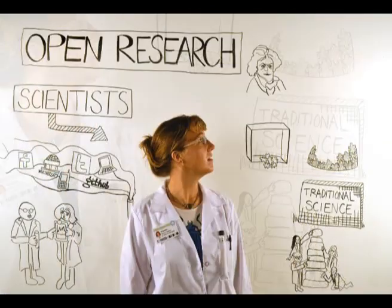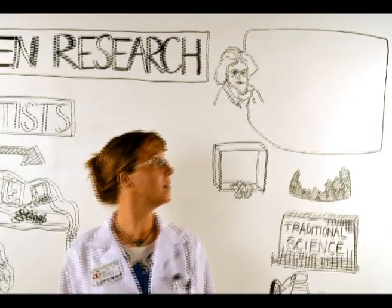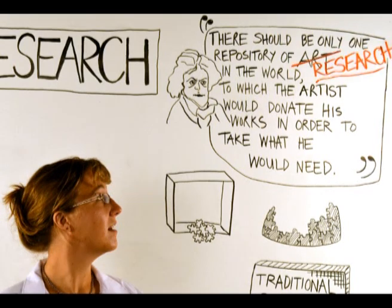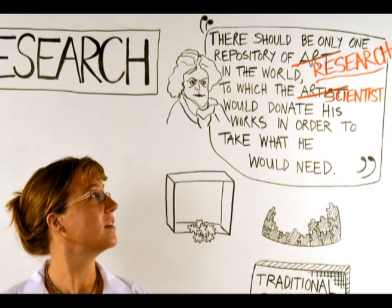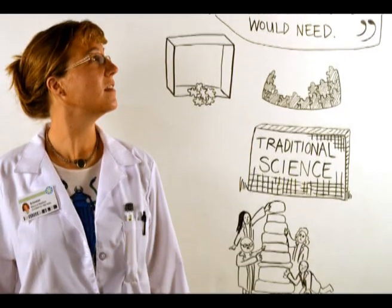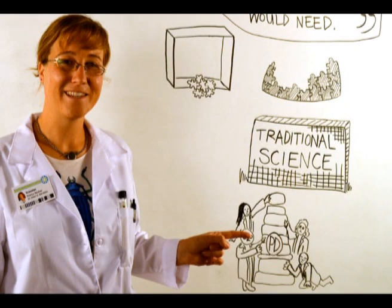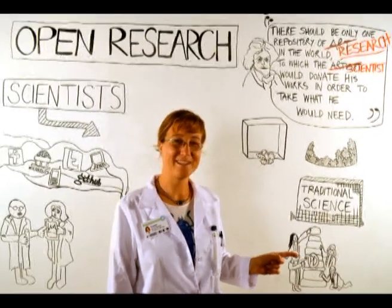As Beethoven said, there should be only one repository of research in the world, to which the artist would donate his works in order to take what he would need. Ideally, scientific research would be in the public domain by default, and Beethoven's repository would be federated rather than centralized.